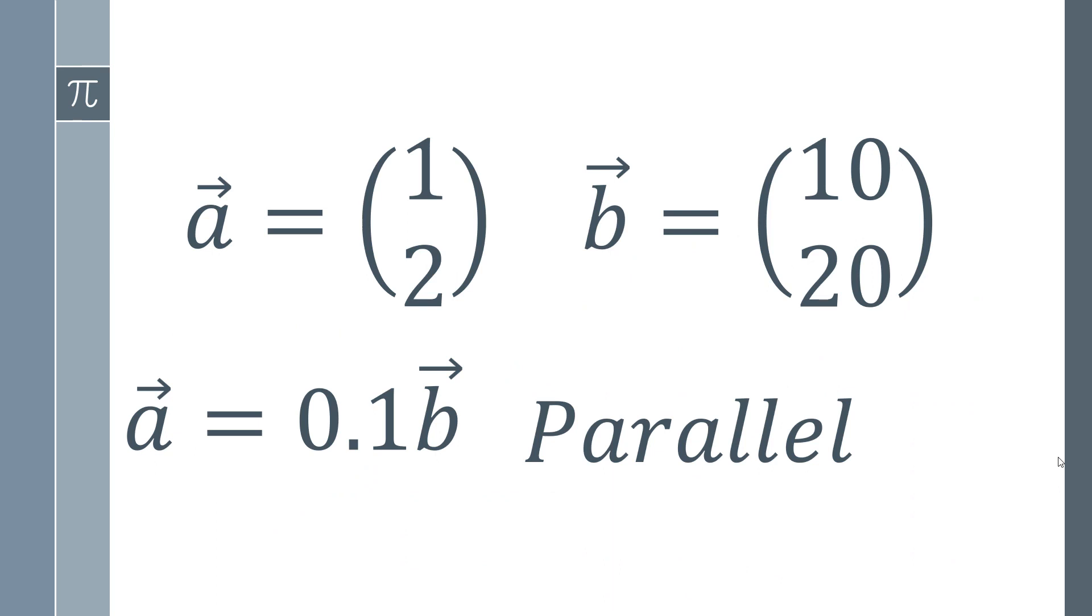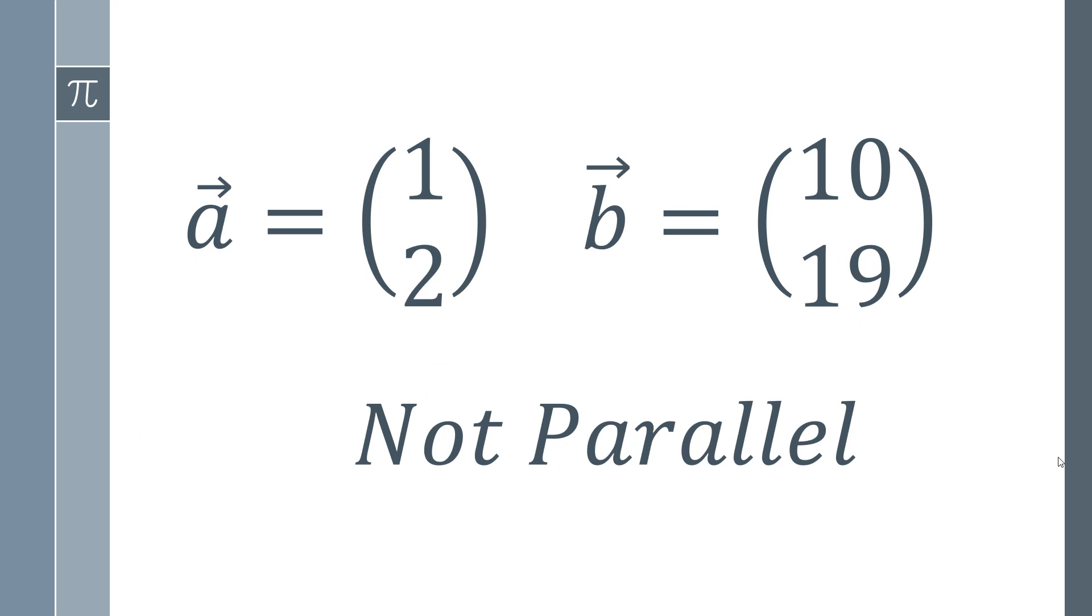Let's make a very slight change to vector B. And we're going to change it to 10, 19. Now, of course, if we just take vector B and divide each of the components by 10, we don't get vector A. So as it turns out, these two are not parallel. There is not one single number that will turn vector B into vector A. So we can prove these are not parallel.